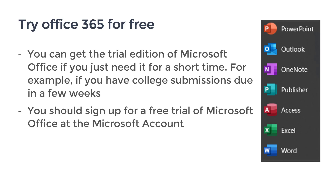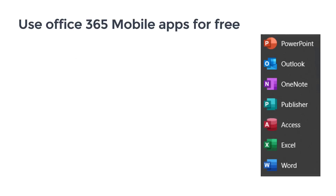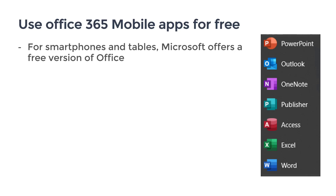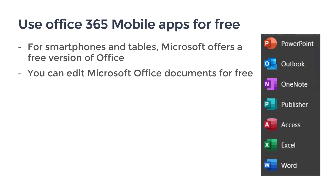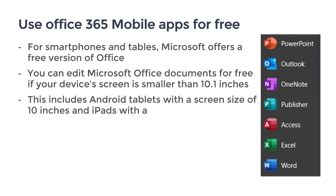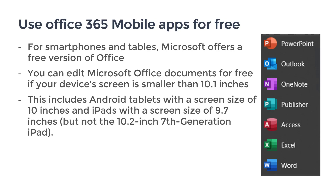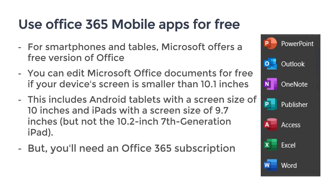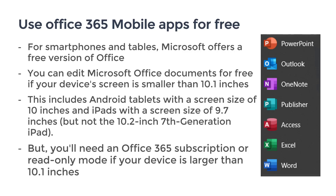Another way of getting Office 365 is to use Office 365 mobile apps for free. For smartphones and tablets, Microsoft offers a free version of Office. You can edit Microsoft Office documents for free if your device screen is smaller than 10.1 inches — this includes Android tablets with a screen size of 10 inches and iPads with a screen size of 9.7 inches, but not the 10.2-inch seventh-generation iPad. You need an Office 365 subscription or read-only mode if your device is larger than 10.1 inches.